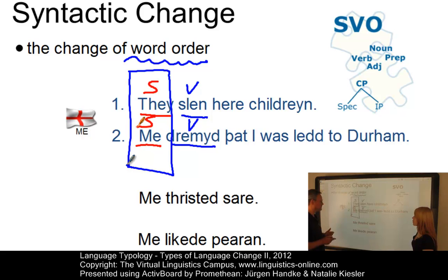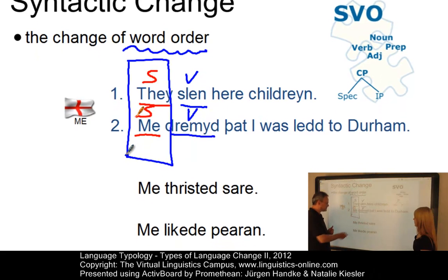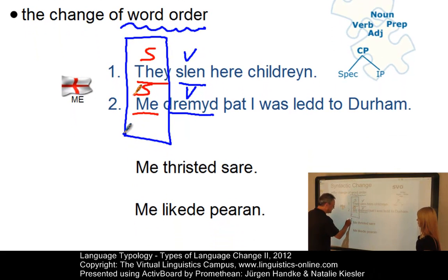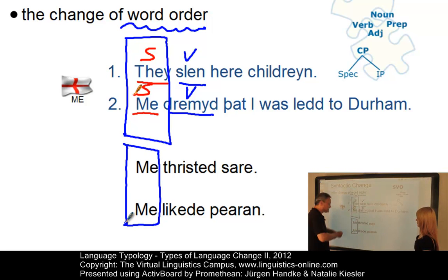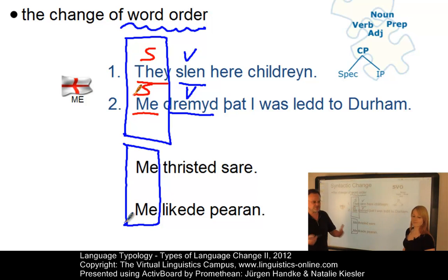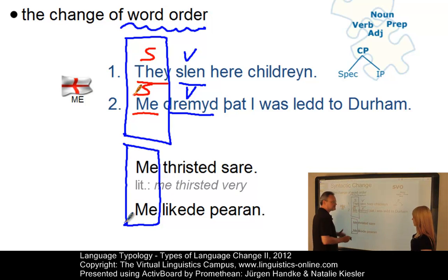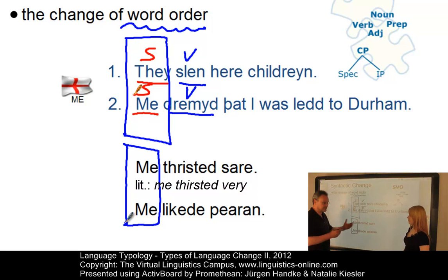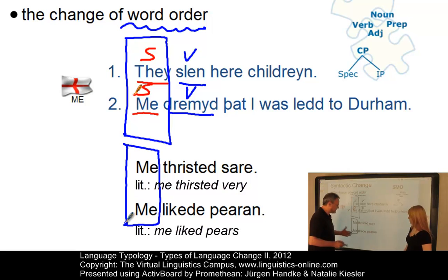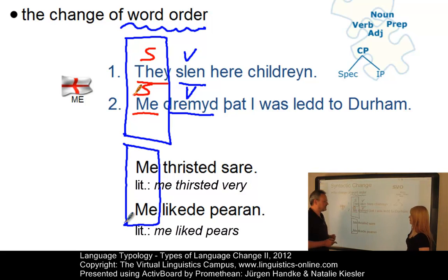To bring the word order of constructions such as that example into line with the majority of other sentences, the topic in such constructions is fronted: 'Me' became 'I,' so the result was 'I dreamed that.' Two further Middle English constructions show the same pattern: 'Where me thristed sare,' meaning literally 'me thirsted very,' came out as 'I am thirsty.' And 'me likede pehrs,' meaning 'me liked pears,' became 'I like pears.'